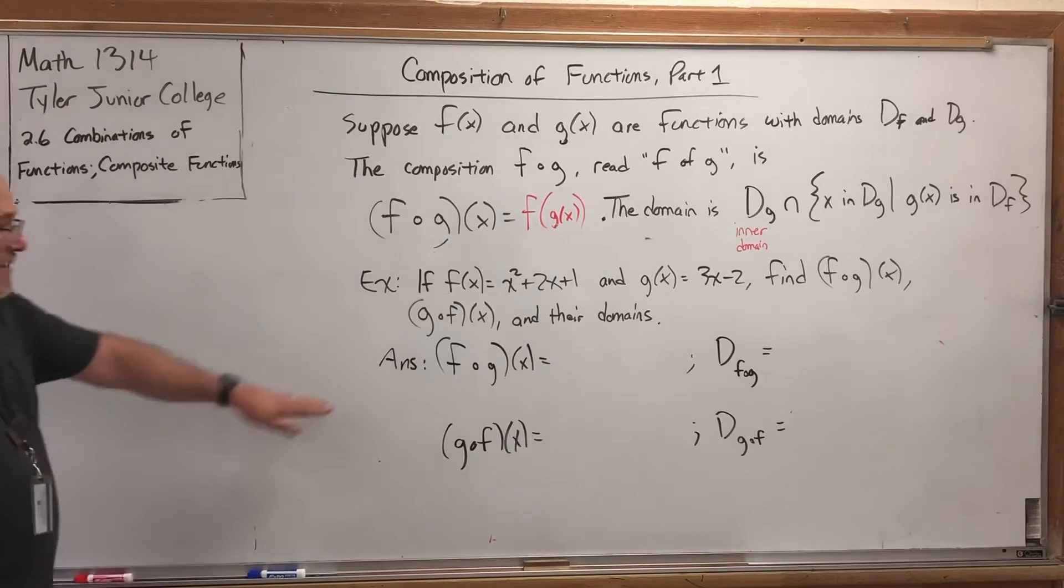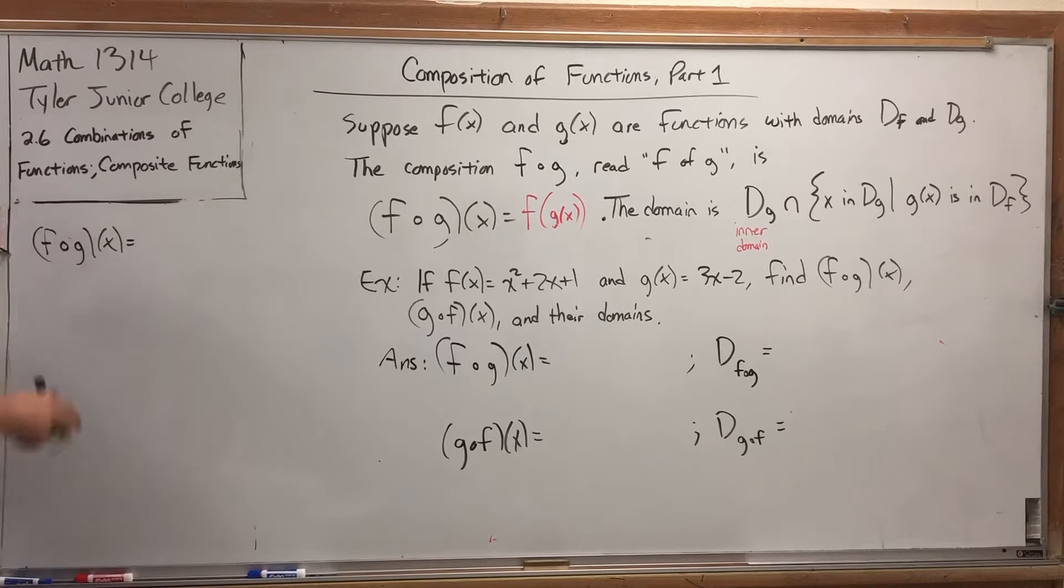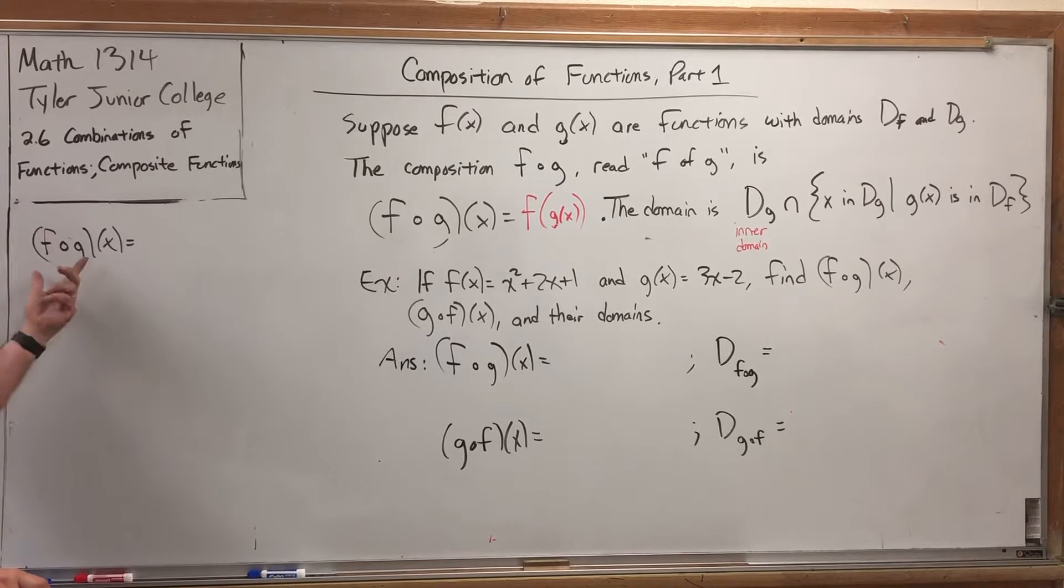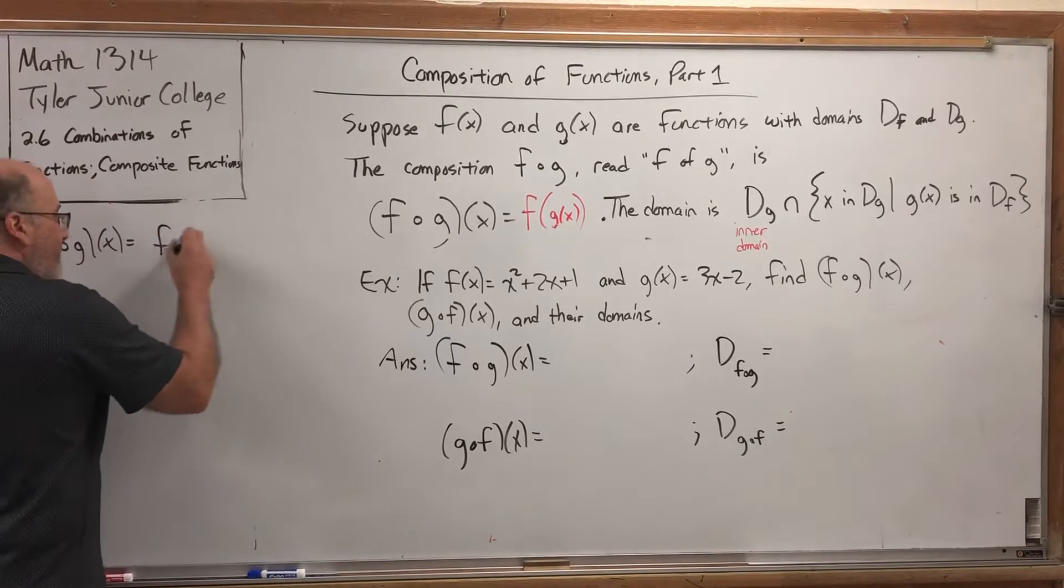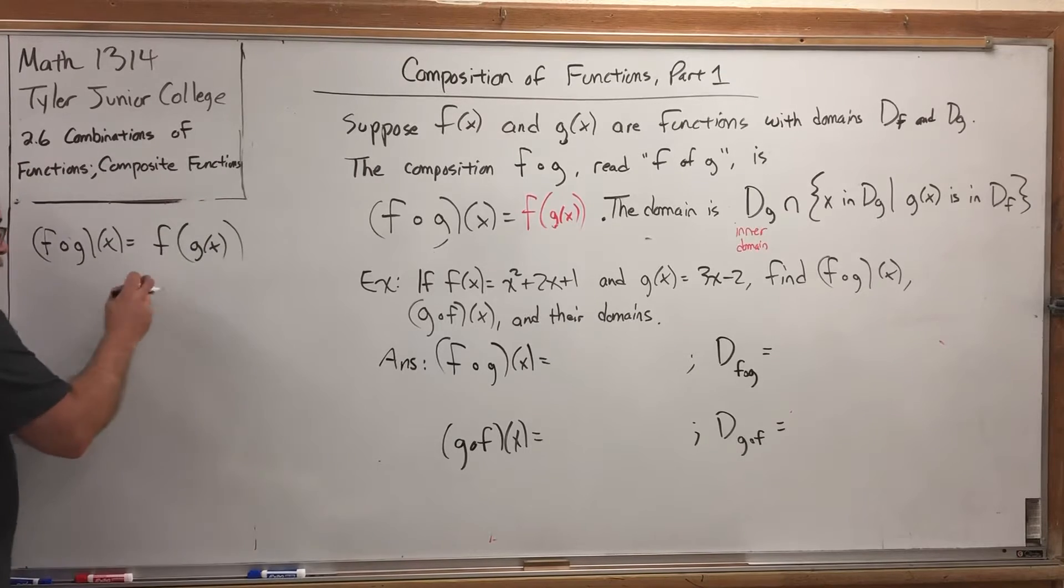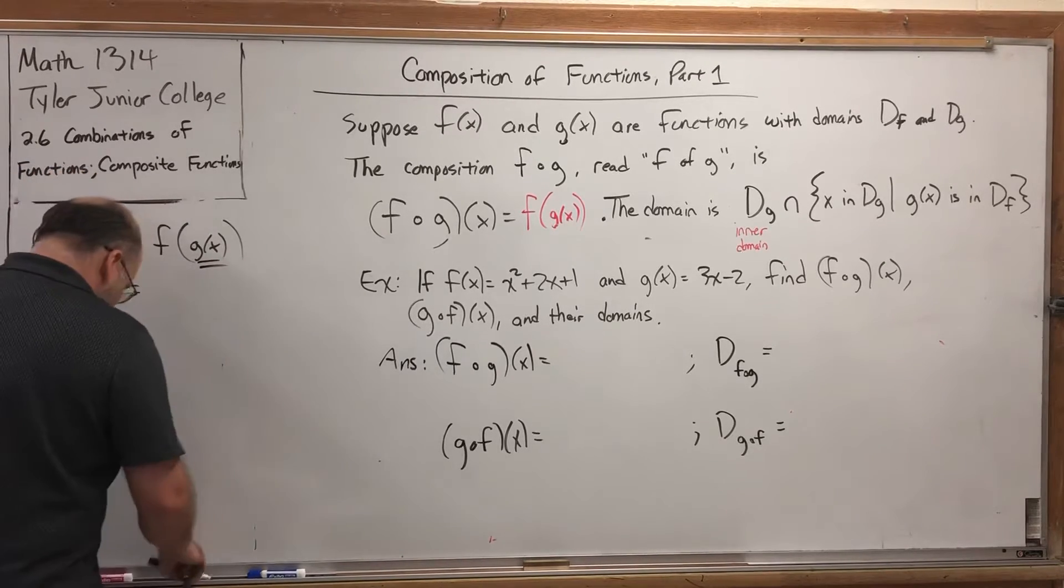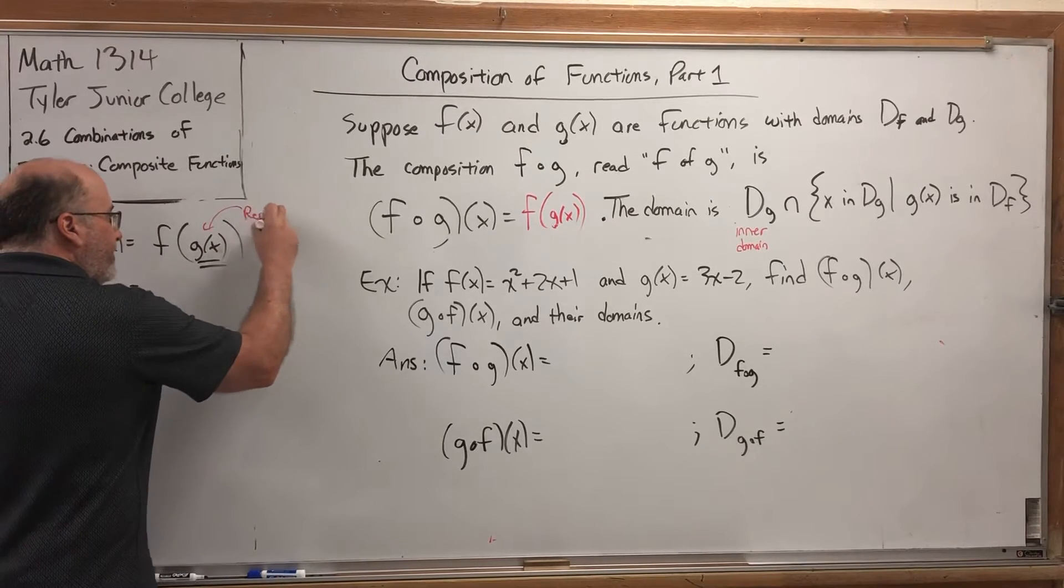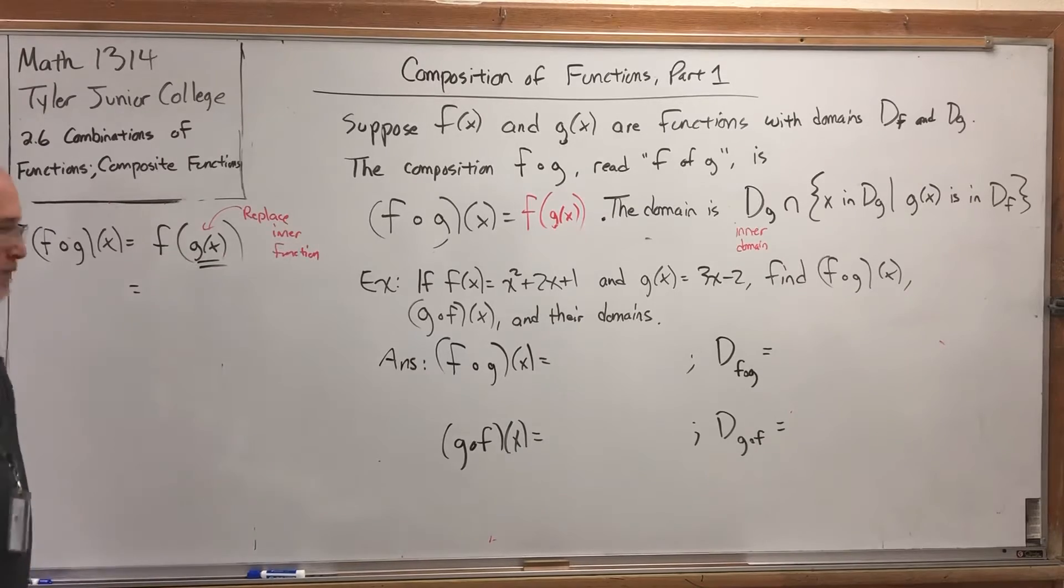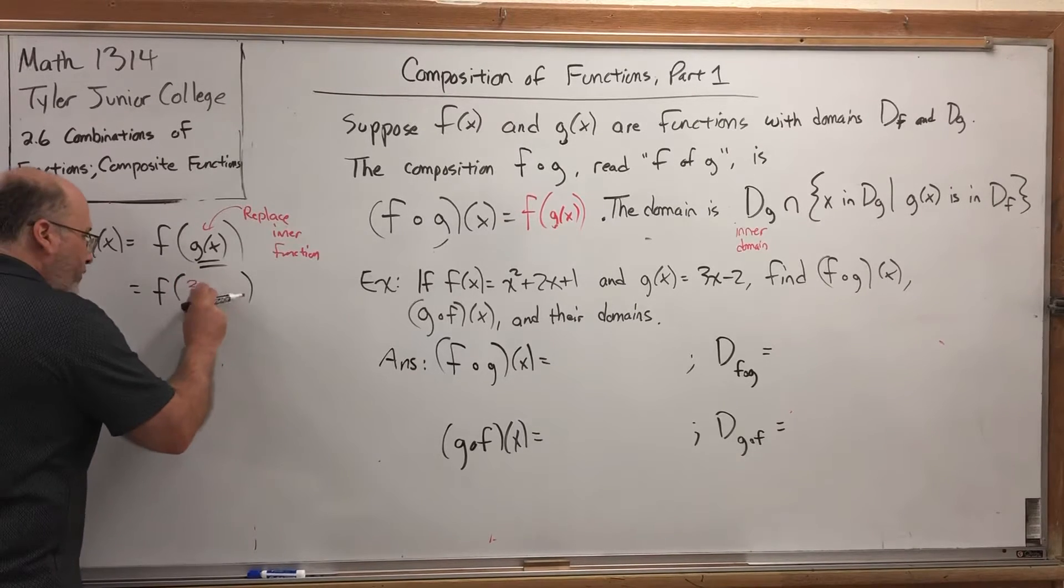For the first part, we need to find f of g of x. And I can't stress this enough, but the catalyst for setting this off is reading this with a pause after the first of instead of the second. f of g of x means f of g of x. Now, where do we go from here? Well, inside out. Go to the inner function and replace it with what it equals. So, replace the inner function. And what does the inner function equal? Well, in this problem, it's 3x - 2. So, I'm going to leave the outer function alone for a minute and replace the inner function with 3x - 2, which I'm going to write in red just for contrast.